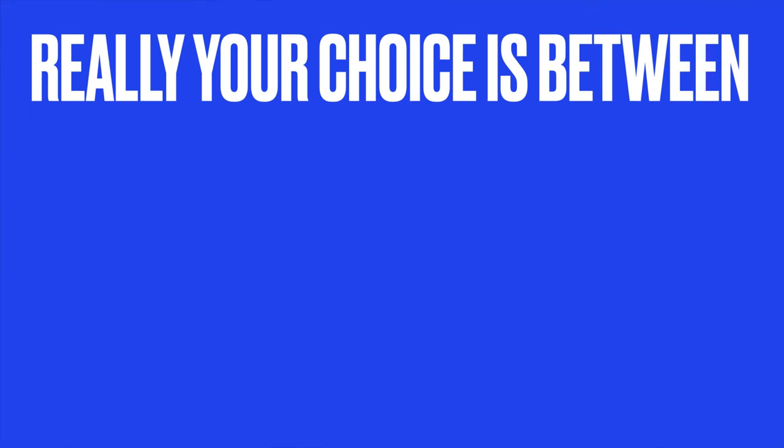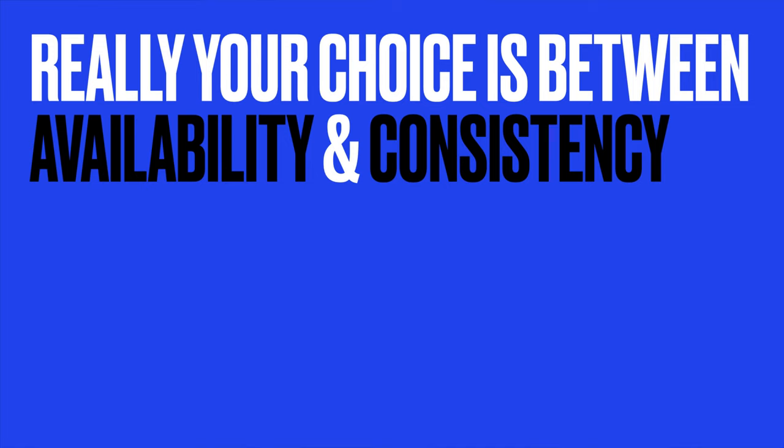The TLDR of this section is that the CAP theorem is not really about choosing any two options out of the three, but really about choices between availability and consistency. In other words, partition tolerance is a given, and when a partition happens, will you choose to sacrifice availability by refusing requests, or will you choose to sacrifice consistency by letting the parts operate independently and re-syncing once communication is restored?